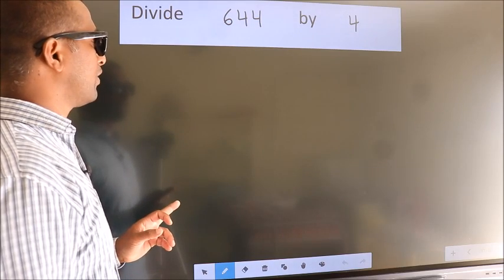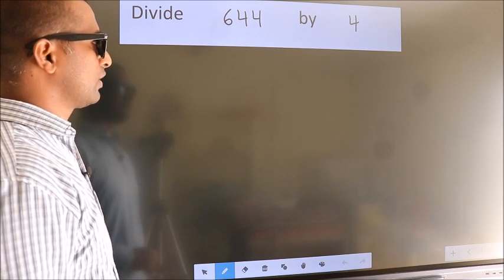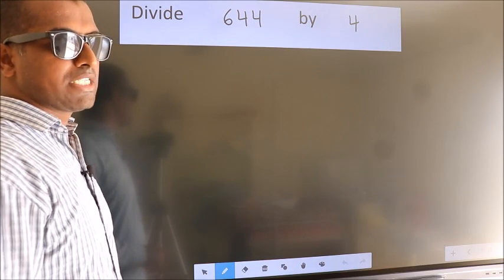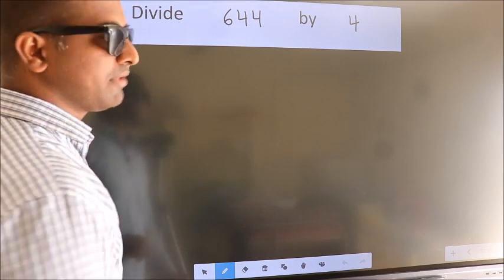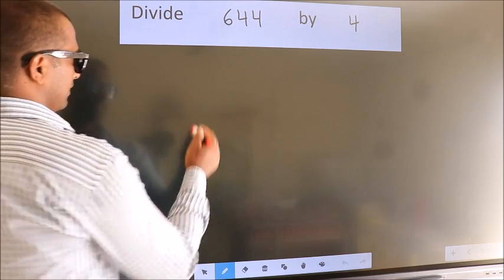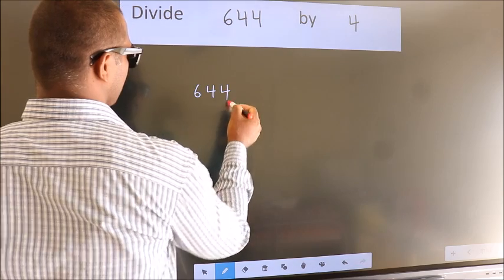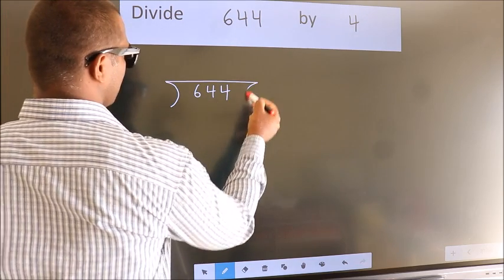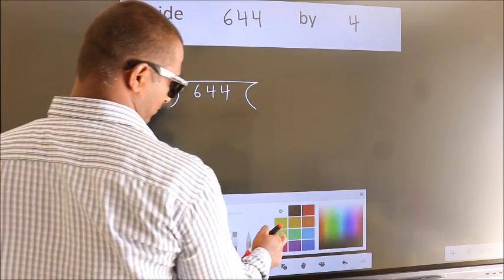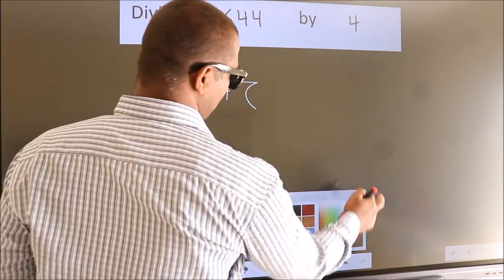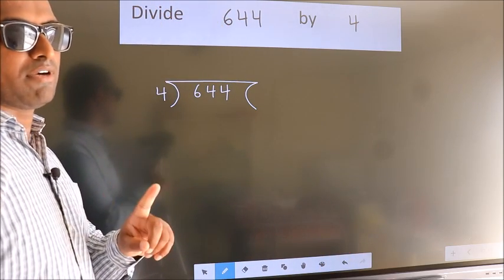Divide 644 by 4. To do this division, we should frame it in this way: 644 here, 4 here. This is your step 1.